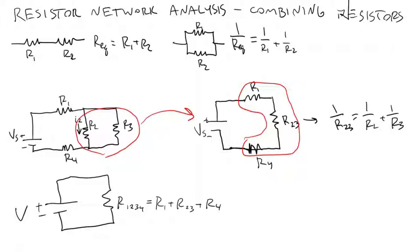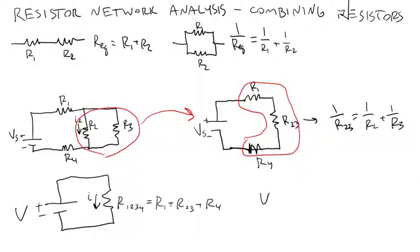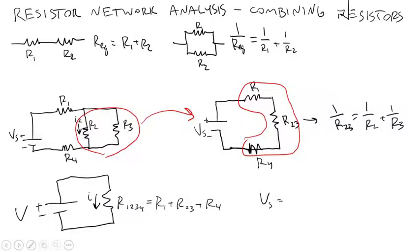And now I can easily solve for the current to that equivalent resistor, call that I, using Ohm's law. Vs equals I times R1,2,3,4. Okay, I'm going to go to the next slide here.